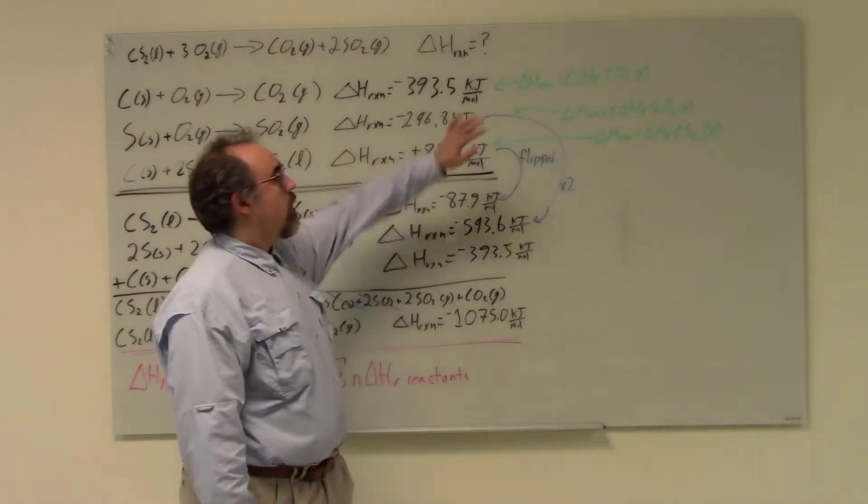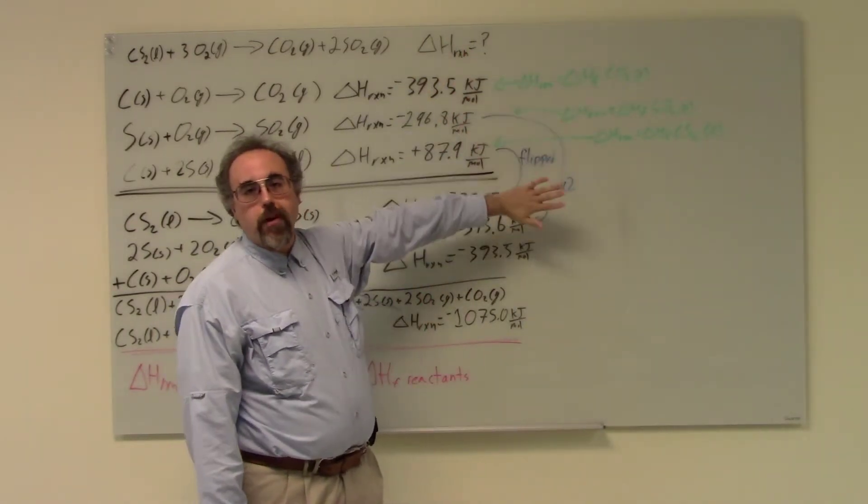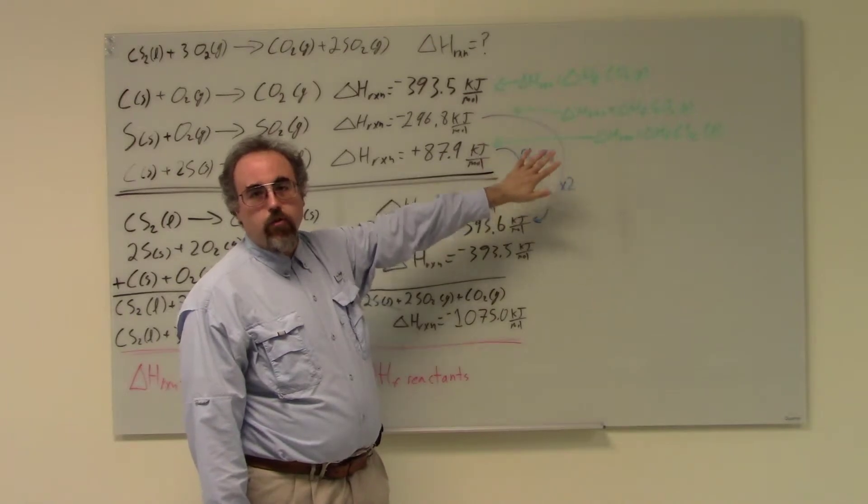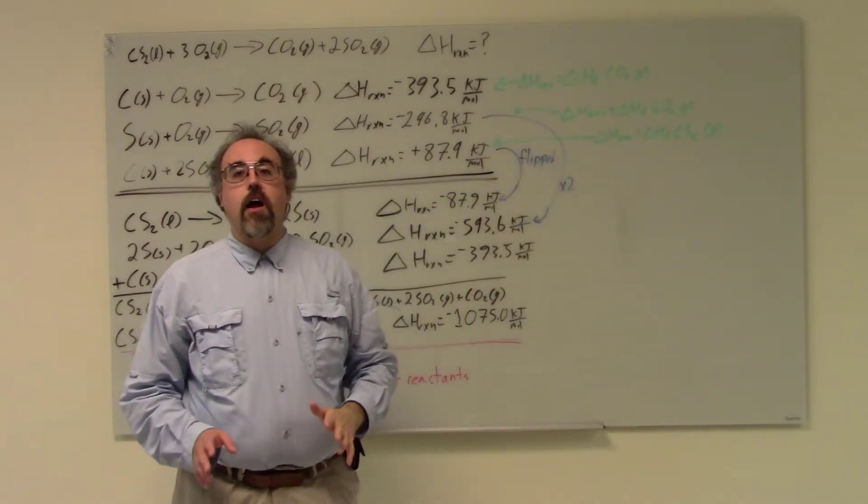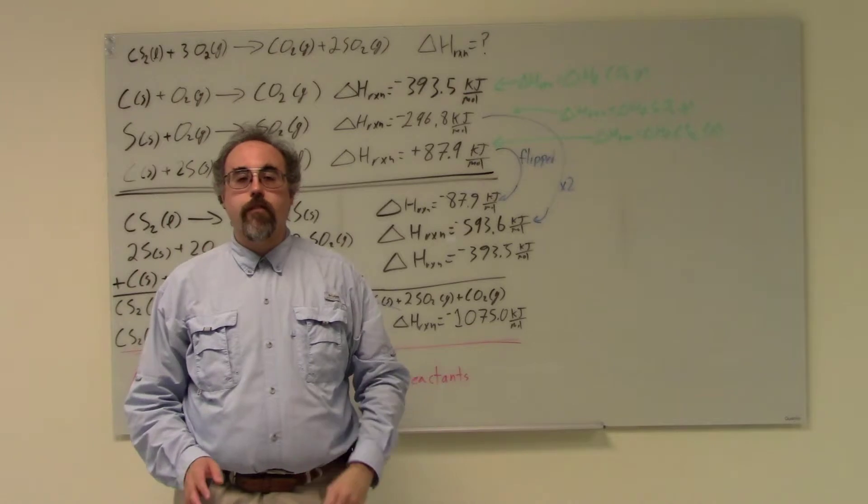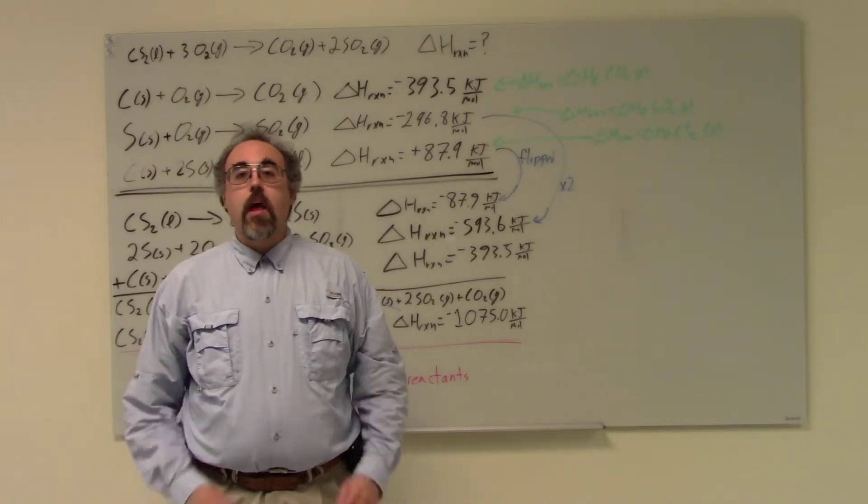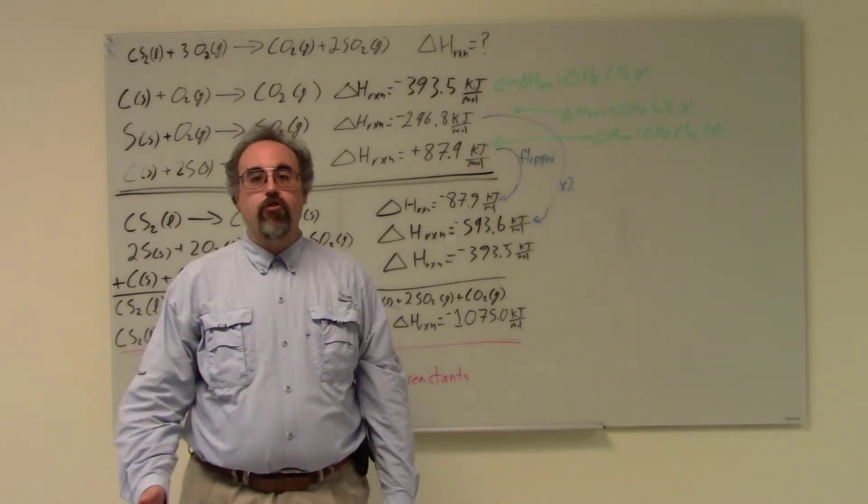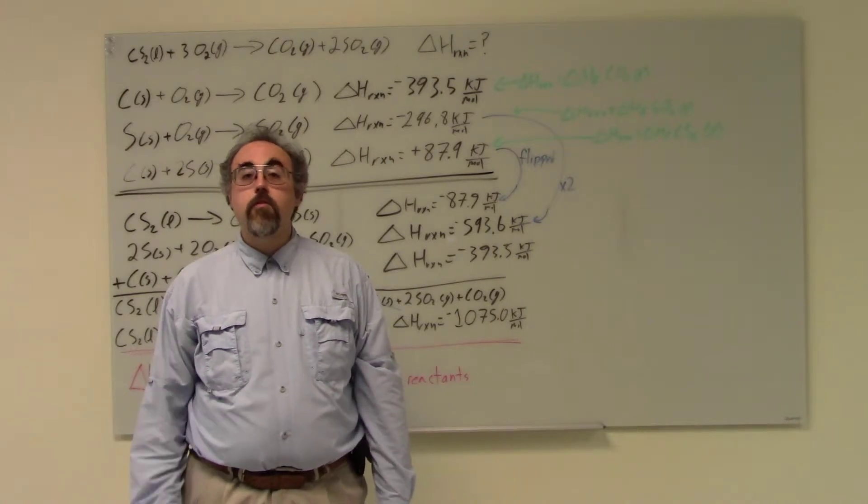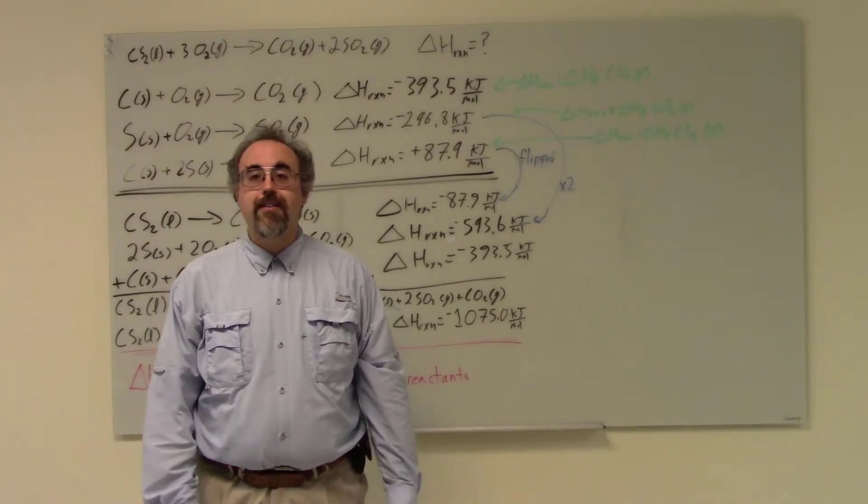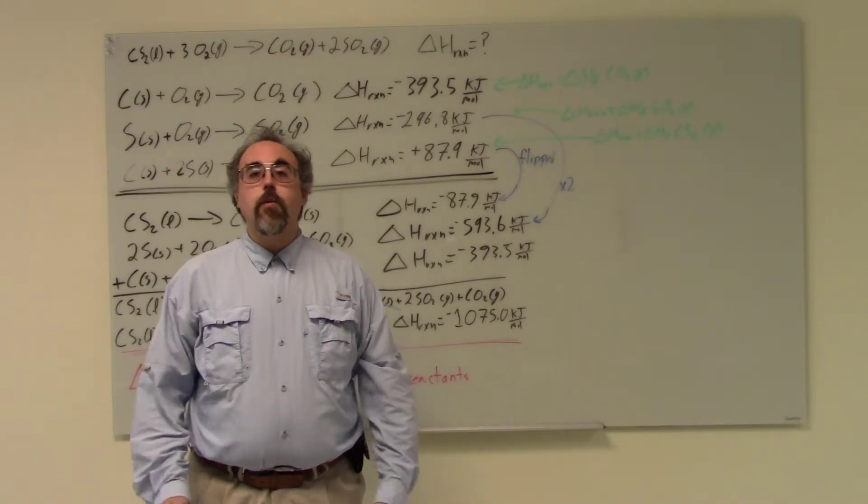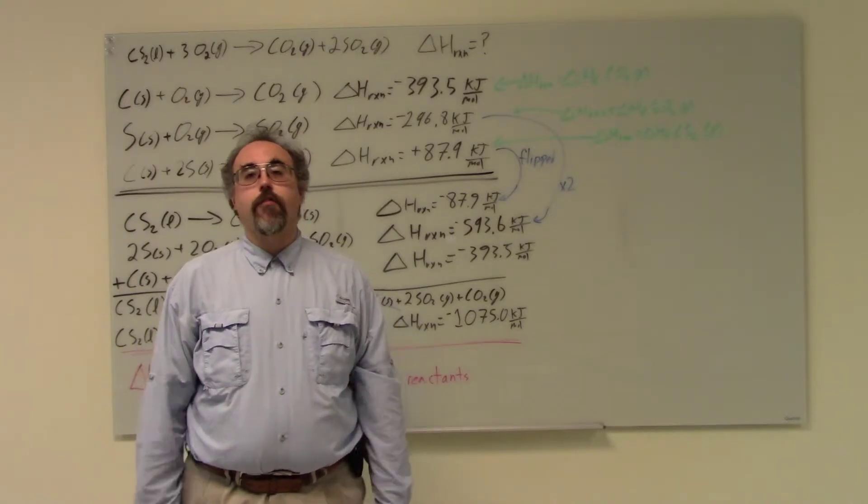Last other caveat. When you are looking up these delta H of formations, these heats of formations, what you will find is that you can't find, quite often, elements. If I want to look up the heat of formation of oxygen, it probably won't be in my table. There's a fairly straightforward reason for this. It's zero. Whenever you have those basic elemental forms, the heat of formation is going from that form to a different form.